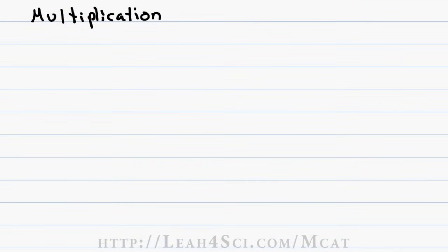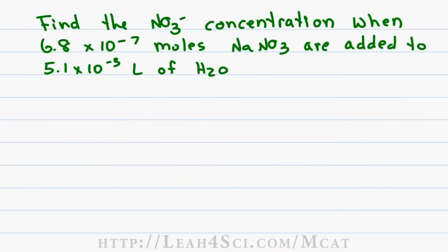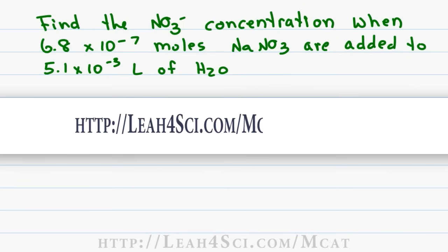Multiplication of exponents may show up on your MCAT in a question like this. Find the NO3 minus concentration when 6.8 times 10 to the minus 7 moles of NaNO3 are added to 5.1 times 10 to the minus 3 liters of H2O. Finding molarity is a topic that will be discussed in the chemistry series at leah4sci.com/MCAT chemistry, but for now let's focus on the math.